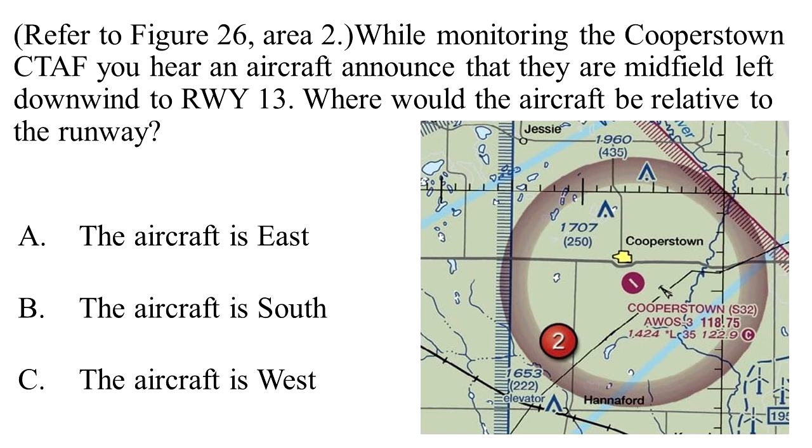Where would the aircraft be relative to the runway? A. The aircraft is east. B. The aircraft is south. Or C. The aircraft is west.